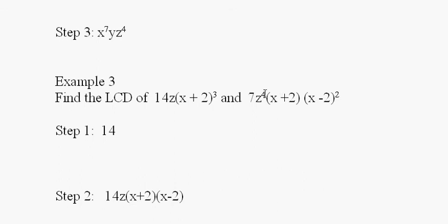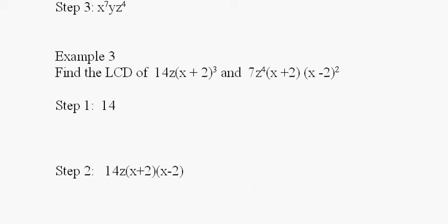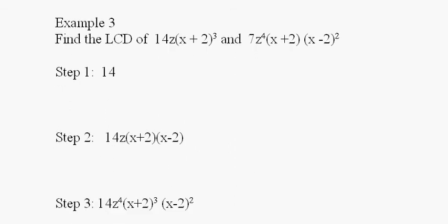Well, z to the fourth is the highest power z occurs. The highest power for x plus two is three, to the third power. X minus two is squared, and that's what I write right here.